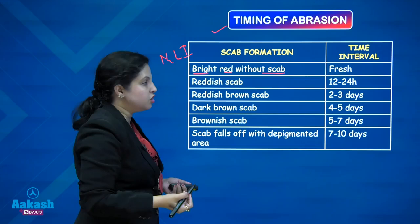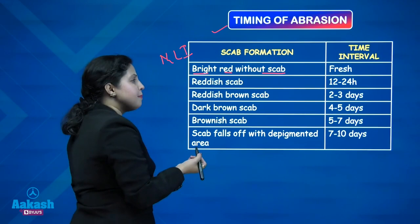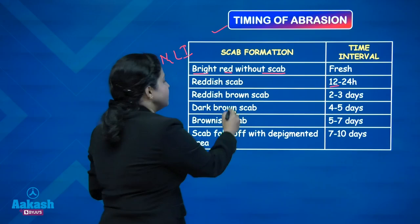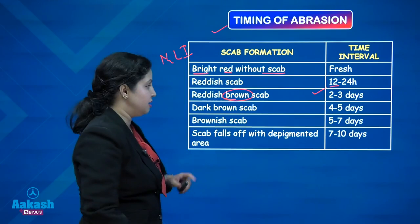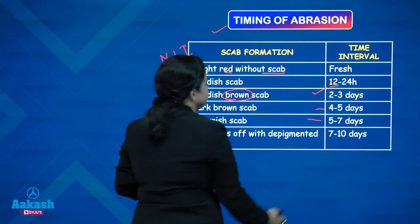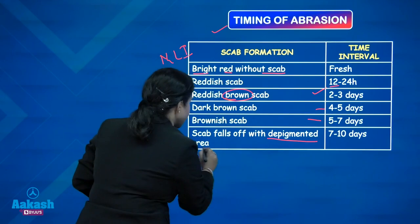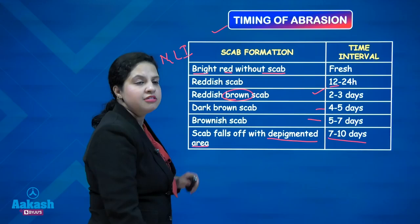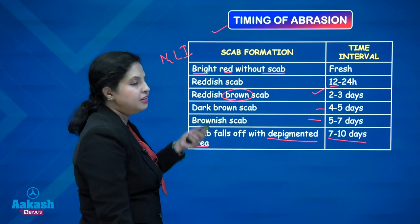If the abrasion is bright red without scab, it is definitely a fresh injury with minimal bleeding. A reddish scab is present around 12 to 24 hours. A reddish-brown scab indicates two to three days. A dark brown scab is generally four to five days. A brownish scab is five to seven days. If the scab has fallen off and there is a denuded or depigmented area underneath, it is seven to ten days.